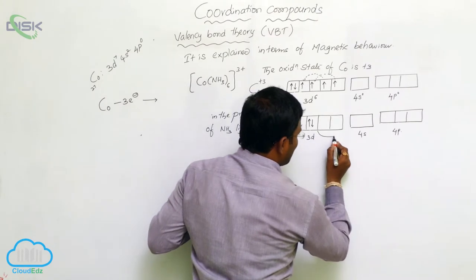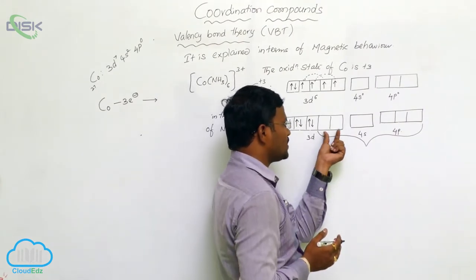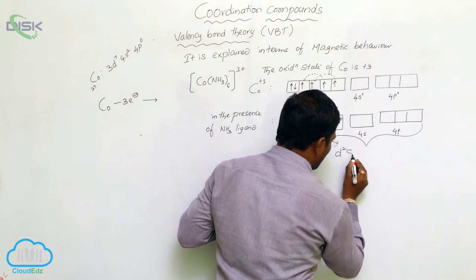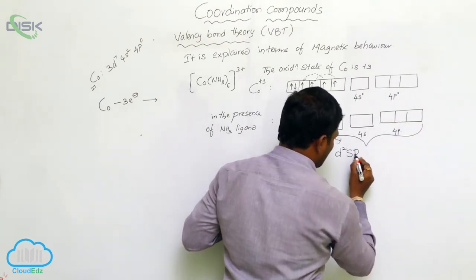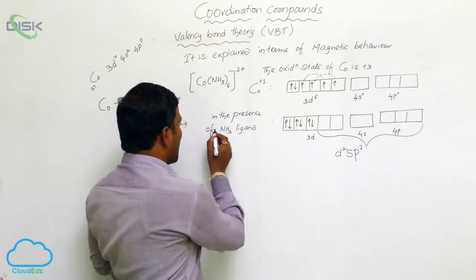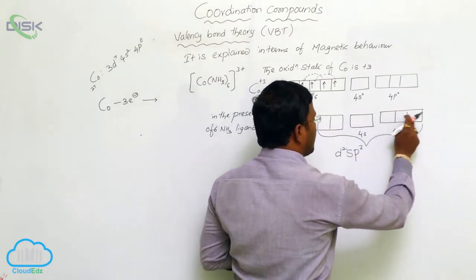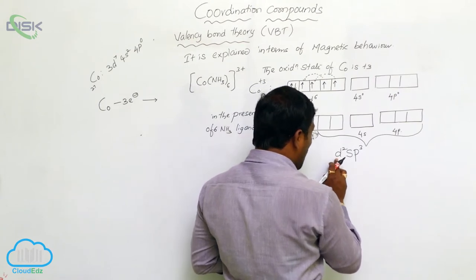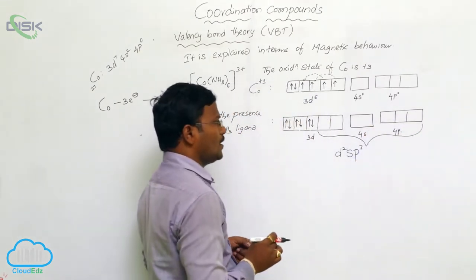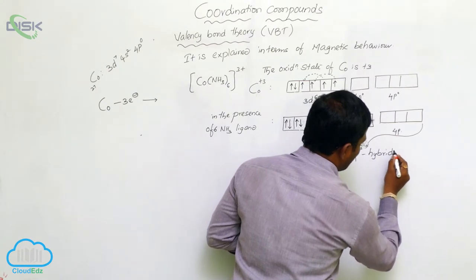Two d orbitals, one s orbital, and three p orbitals participate in hybridization. The hybridization type is d²sp³ — two orbitals from 3d, one from 4s, and three from 4p — giving a total of six hybrid orbitals. This is the expected hybridization of Co³⁺ when six ammonia ligands approach.